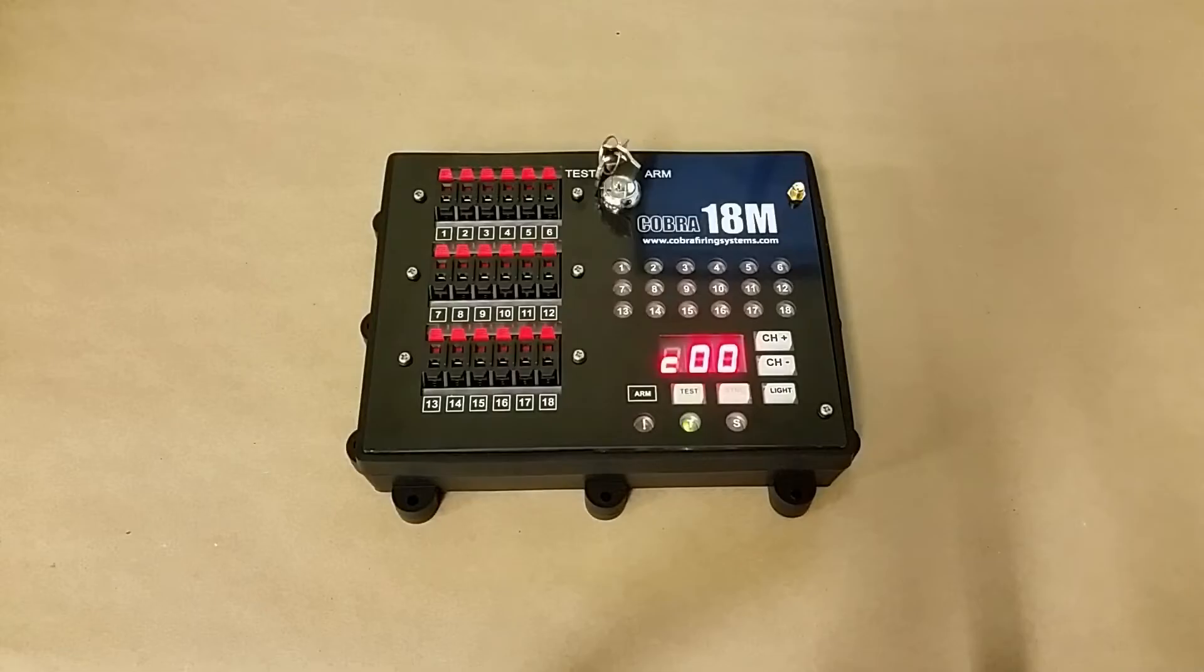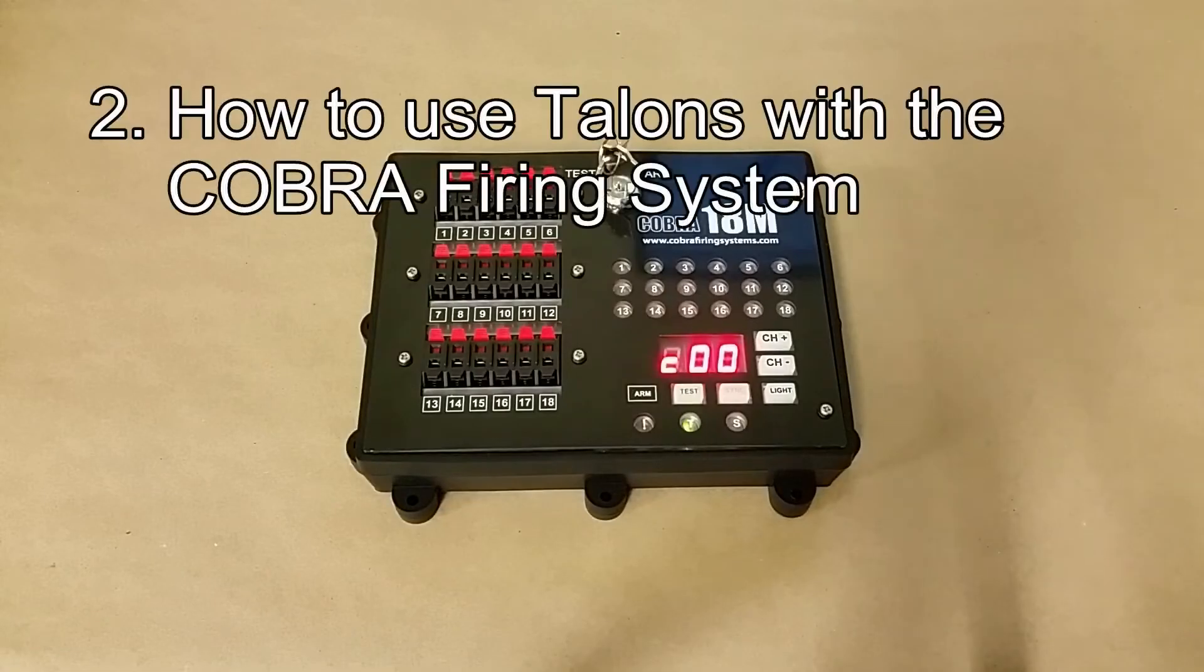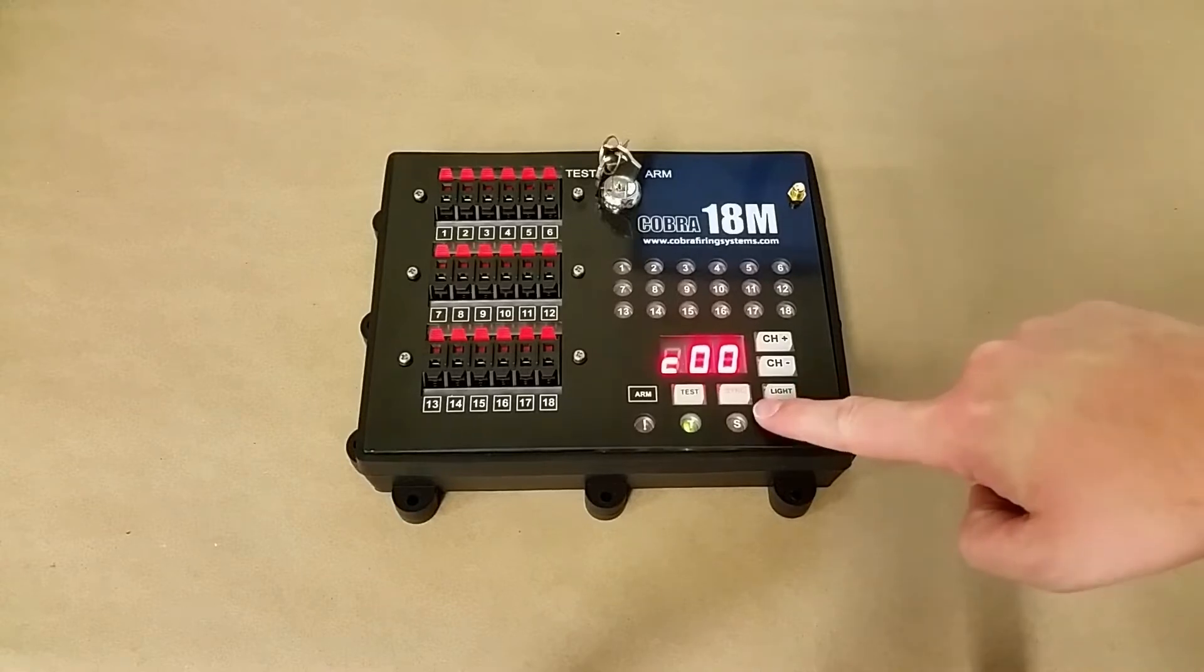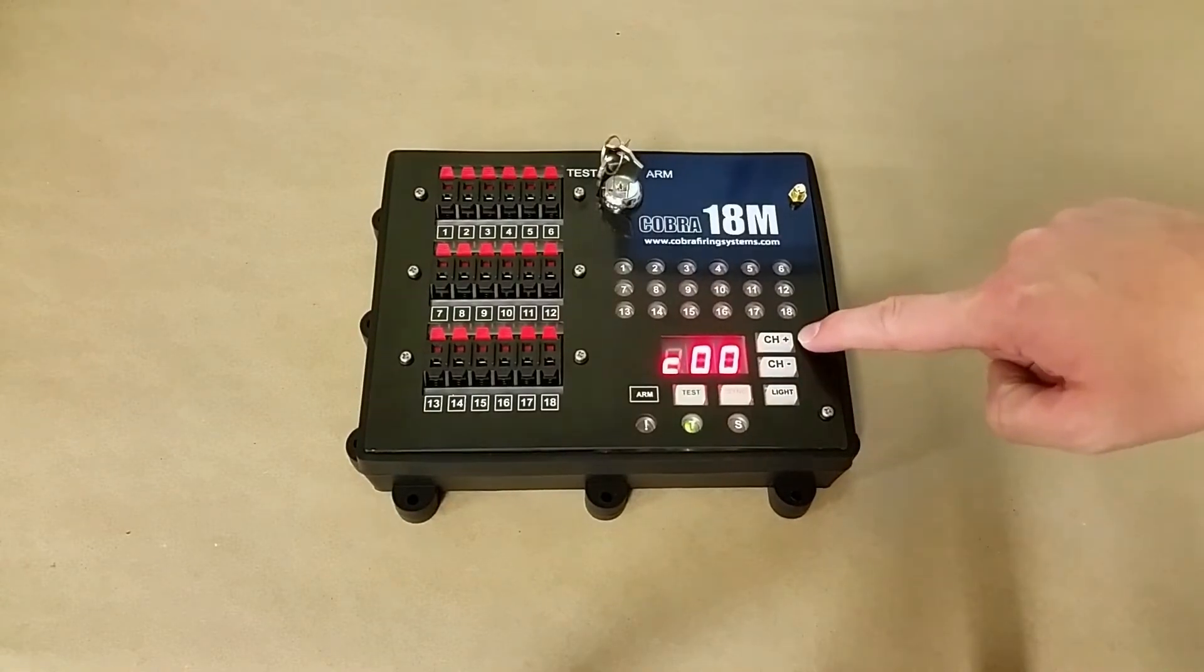The second thing we're going to talk about in this video is how to use Talon igniter clips with Cobra firing systems. Now in order to use Talons, there's a couple things we got to keep in mind. First off, we have to put every module that is firing Talons into Talon igniter mode. It's very easy to do, and all you have to do is push the sync button and the channel up button at the same time.